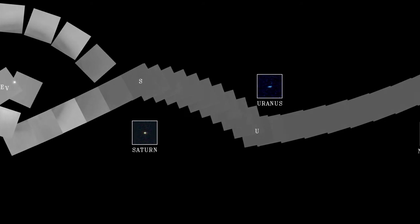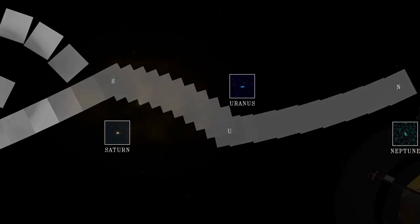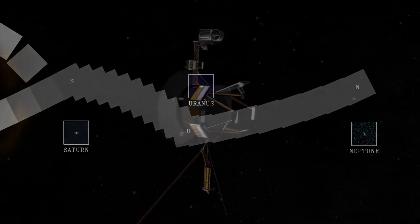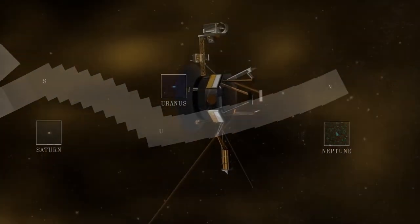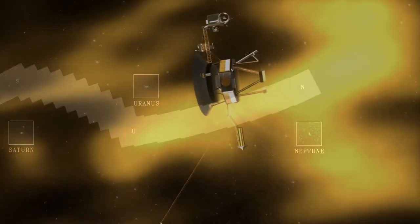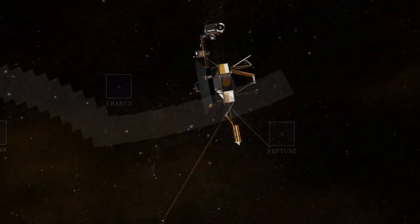After the final images were sent back to Earth, Voyager 1's camera was shut down to save power for its journey beyond the heliosphere. It is currently the farthest man-made object from Earth and is also the most distant object in the solar system with a known location.